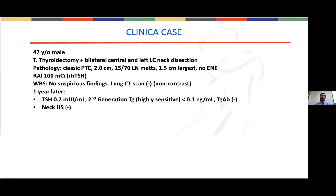nodules in the lung. At an evaluation one year later, using levothyroxine with a TSH of 0.2, the second-generation thyroglobulin showed undetectable thyroglobulin, and there was no presence of thyroglobulin antibodies. Neck ultrasound was negative.